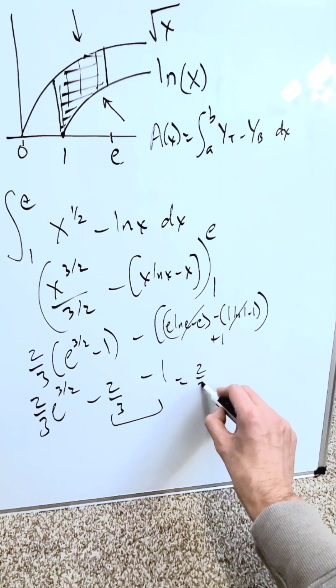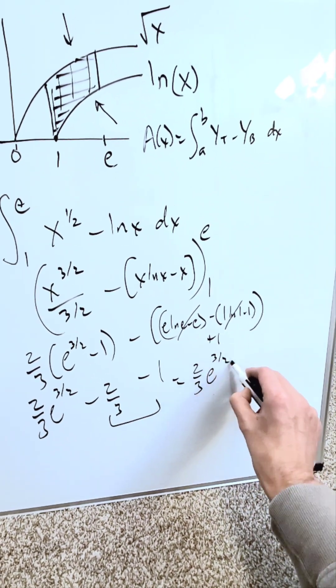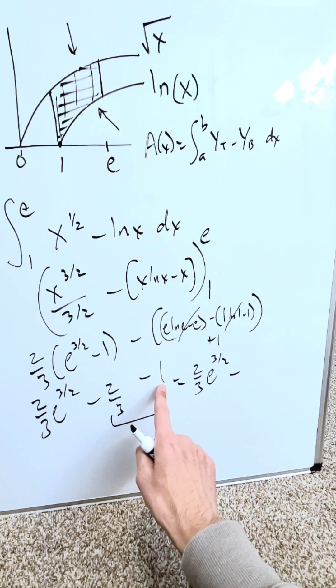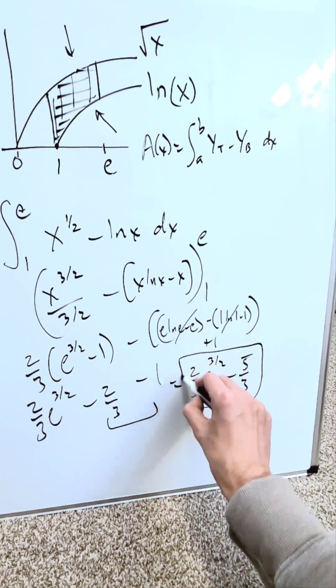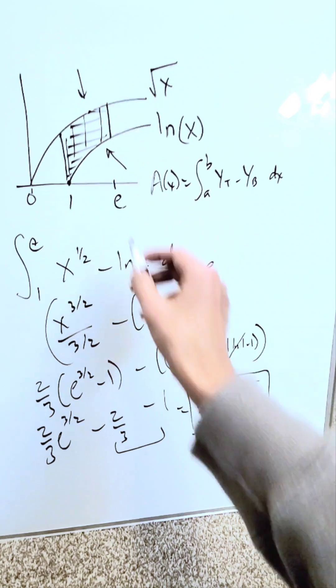My end result will be 2 over 3 e to the power of 3 over 2 minus—I have 3 over 3 and 2 over 3, which would be minus 5 over 3. This here represents the shaded region that you see, the area of it.